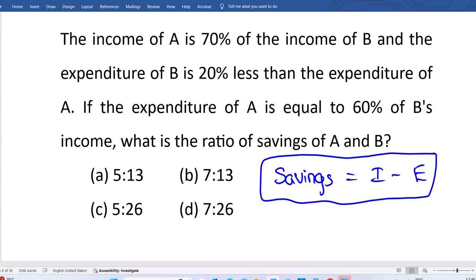We need to write all in terms of A or B, then we can cancel because it's about ratio. Common things should be cancelled. In fact, in the question they give the relationship between A and B expenses. A expenditure is equal to 60% of B income, all those is available.